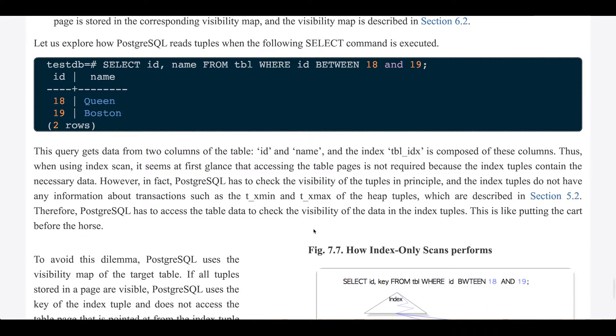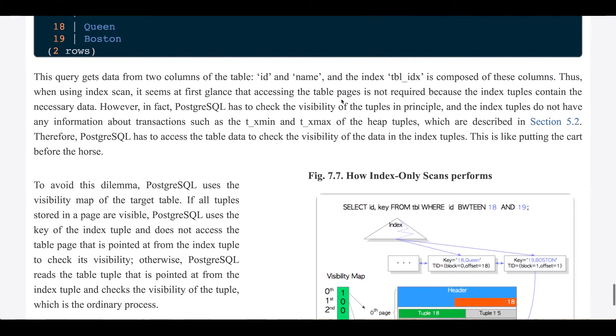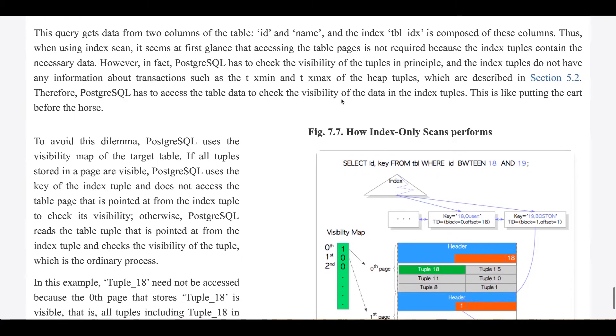Let us explore how Postgres reads tuples when the following select command is executed: select id, name from table where id between 18 and 19. The query gets data from two columns of the table, id and name, and the index, table_index, is composed of these columns.